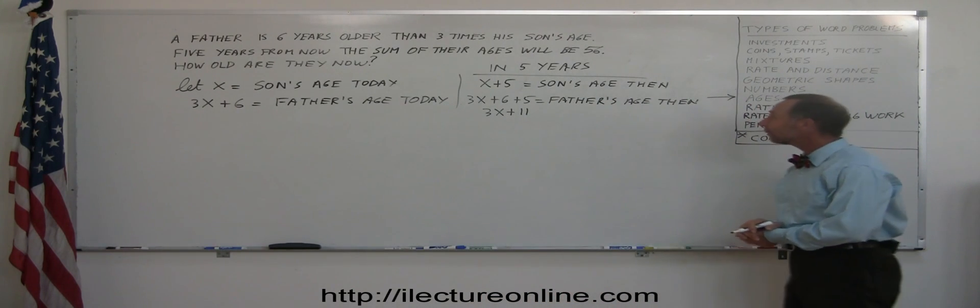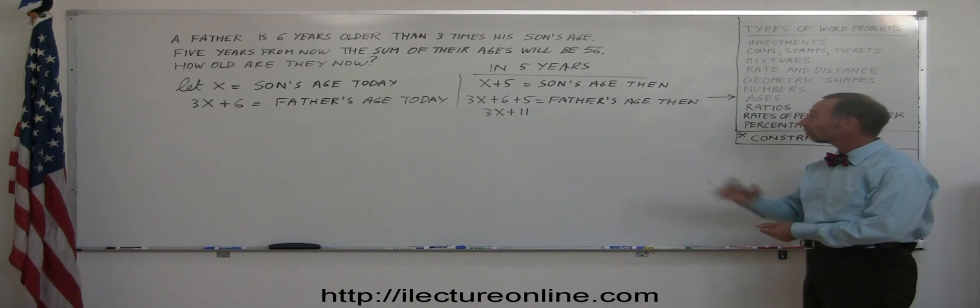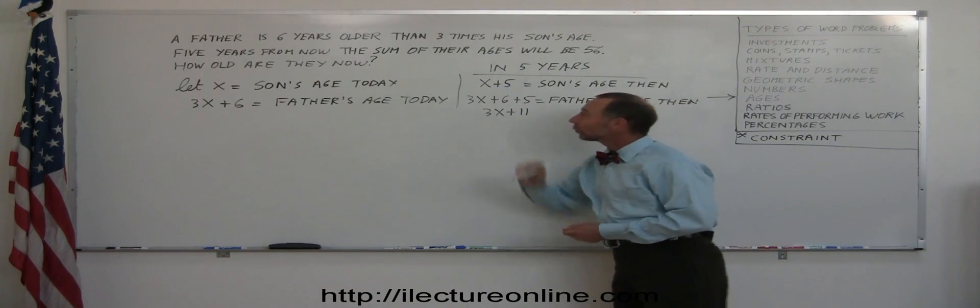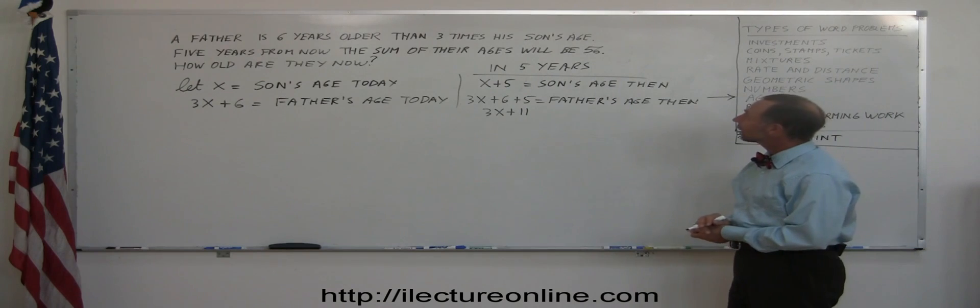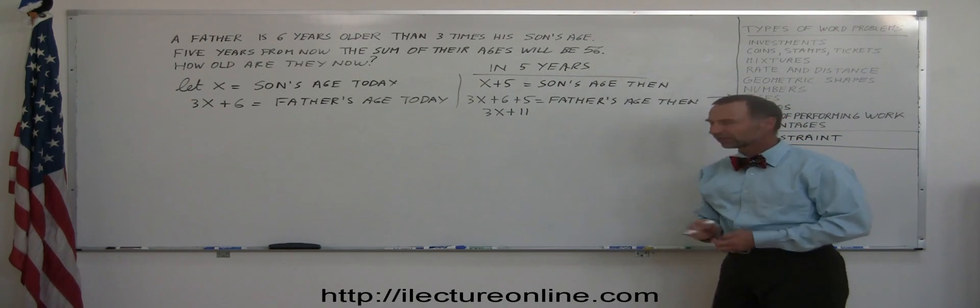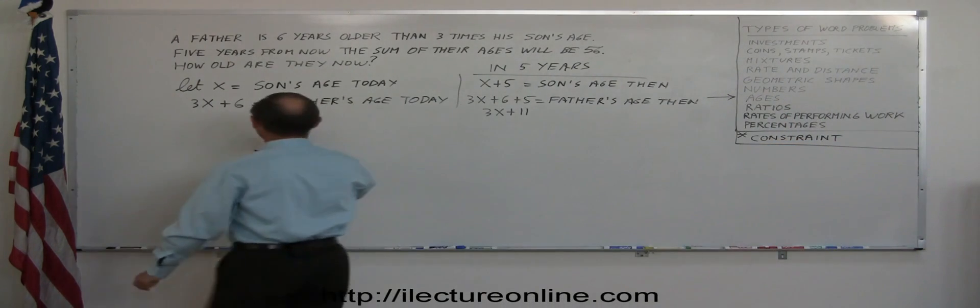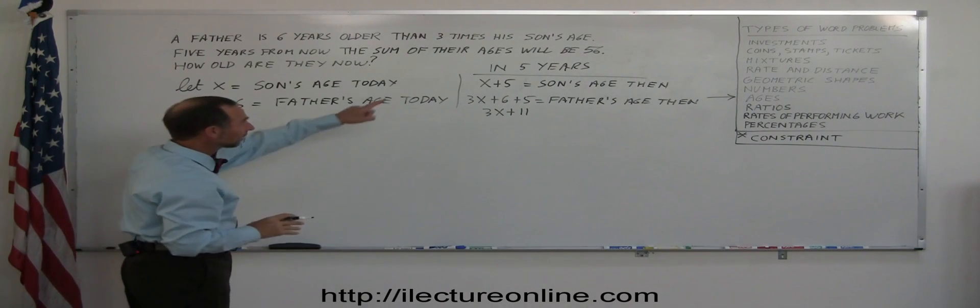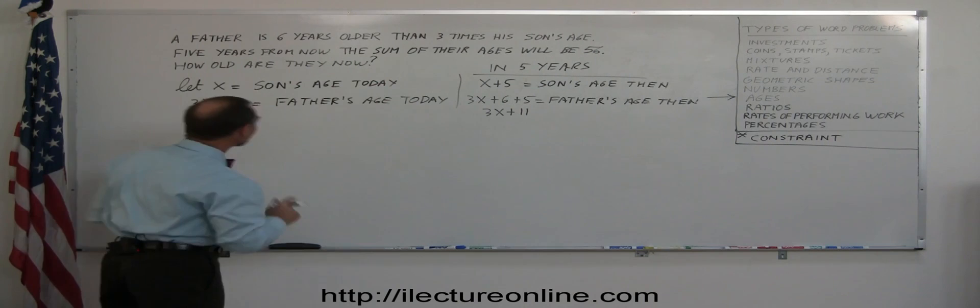Okay, now that we have their ages expressed in terms of what they will be in five years, and the constraint is in terms of what they will be in five years, we can now read that the sum of their ages will be 56. That means the son's age, and again, just to make sure we do this correct, this is the constraint in five years.